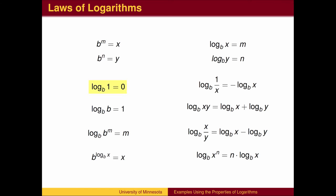Recall the laws of logarithms. Zero is the exponent you put on b to get 1. One is the exponent you put on b to get b. The exponent you put on b to get b to the m power is m. If the exponent you put on b to get x is put on b, you get x.